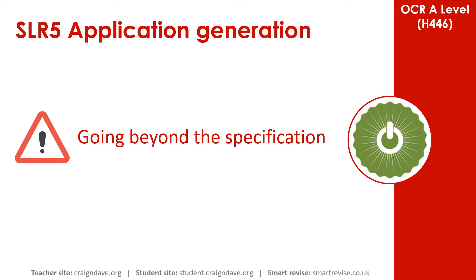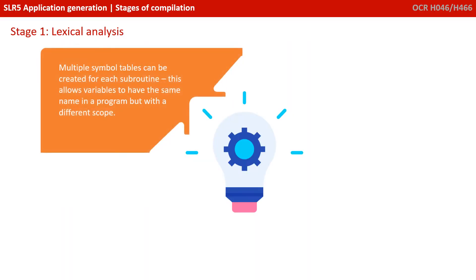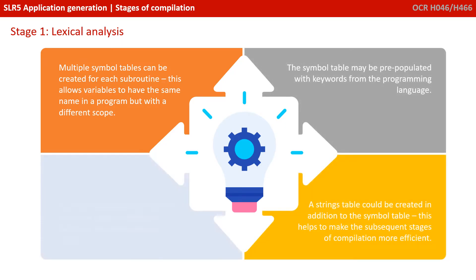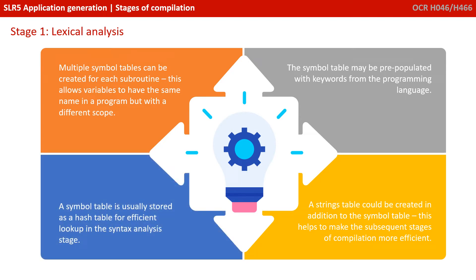Before we move on to syntax analysis, a couple of extra points worth knowing: multiple symbol tables are really created, typically for each subroutine — this is what allows variables to have the same name in a program but with different scope. The symbol tables may be pre-populated with keywords from the programming language, and a strings table could also be created in addition to the symbol table. This helps to make subsequent stages of compilation more efficient. The symbol table typically uses a hash table for very efficient lookup in the syntax analysis stage.